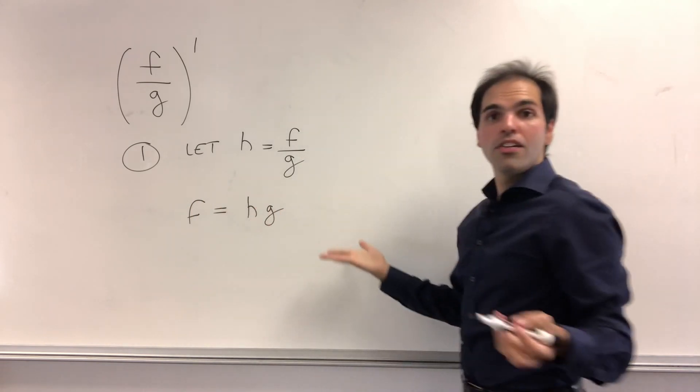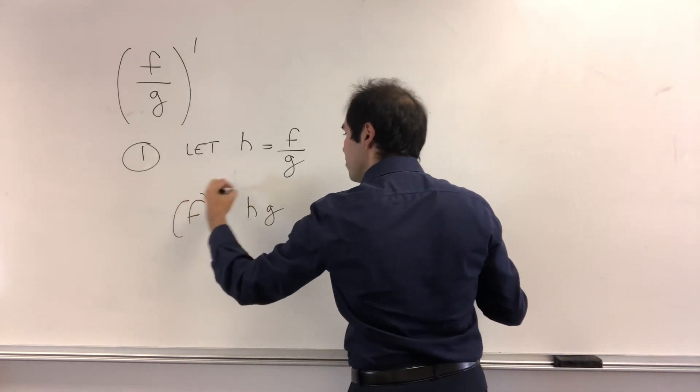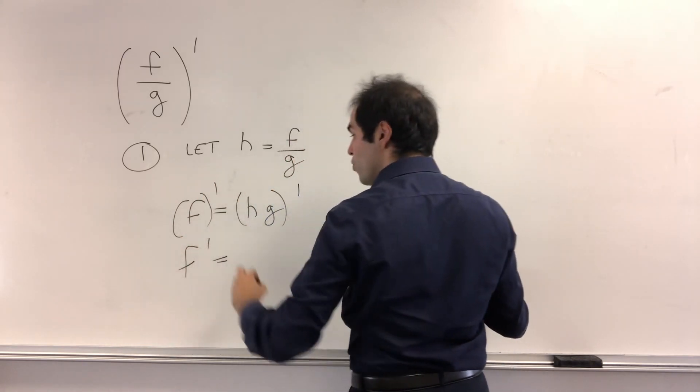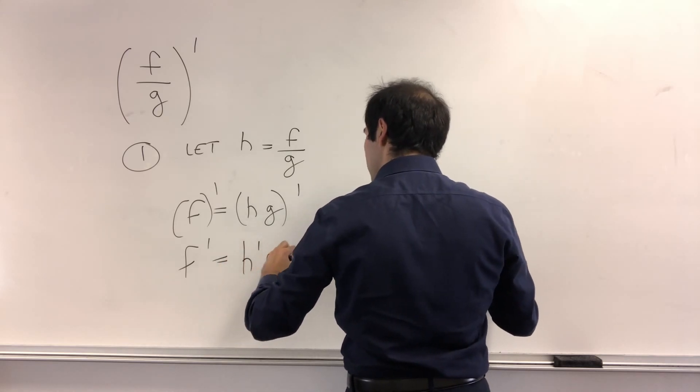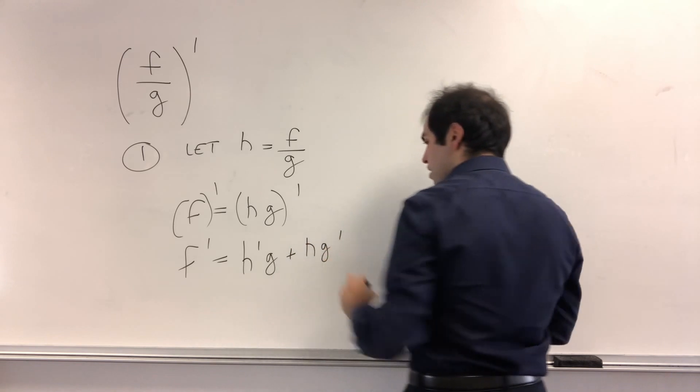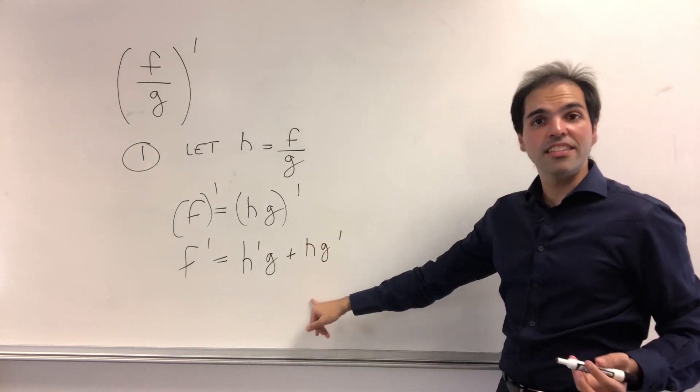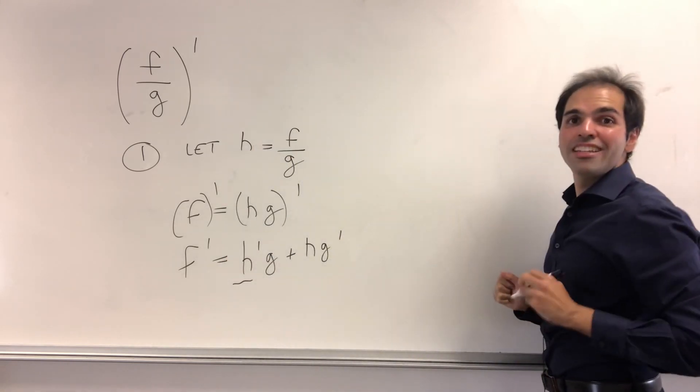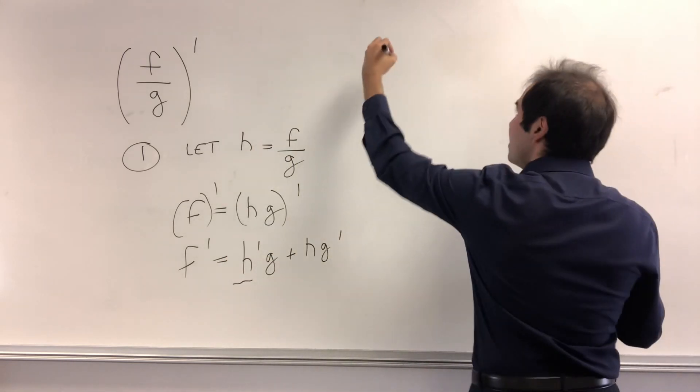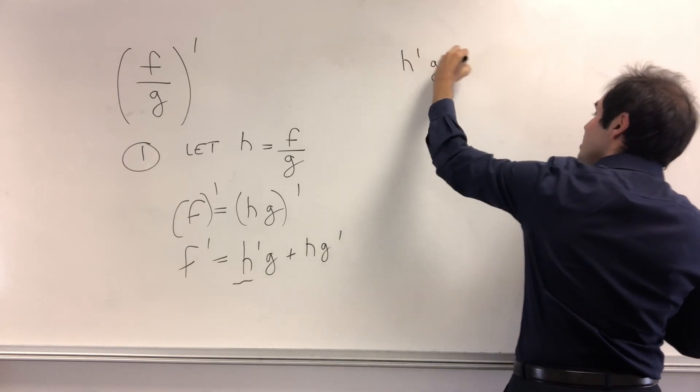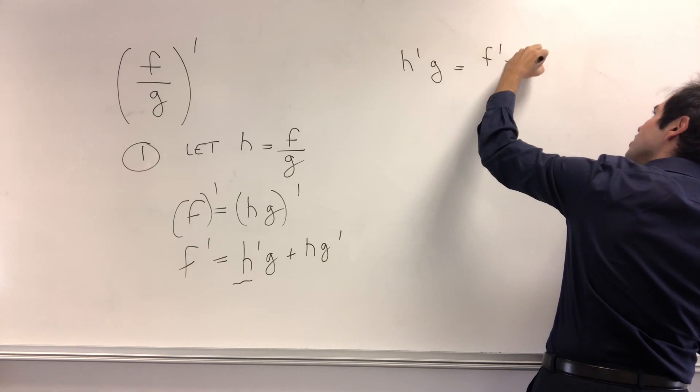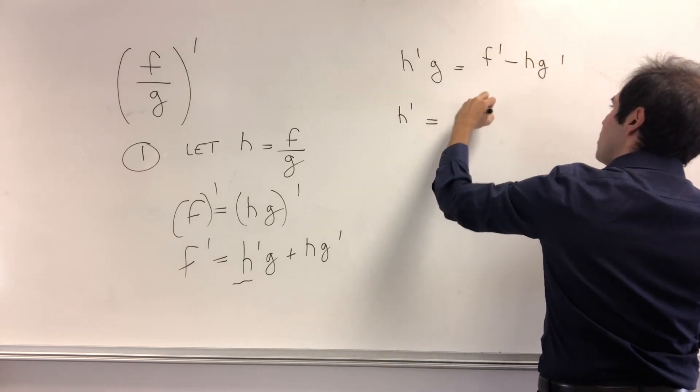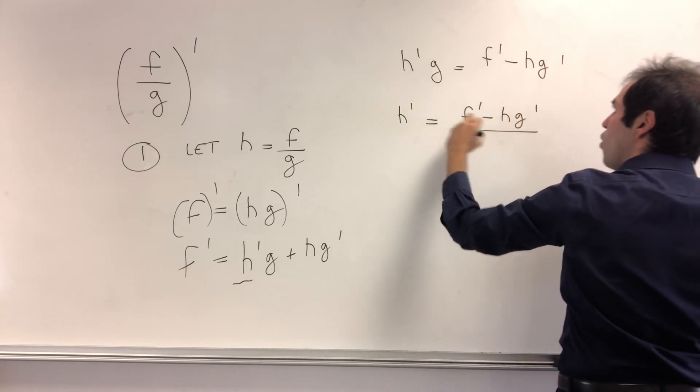Then what we get is that f is hg, and now let's differentiate this. So then f prime is hg prime, and using now the product rule, we get f prime is h prime g plus hg prime. But the nice thing is this is an equation that we can solve for h prime, because we ultimately want to find the derivative of f over g. And so then what we get is h prime g is f prime minus hg prime. And so h prime, that's f prime minus hg prime over g.